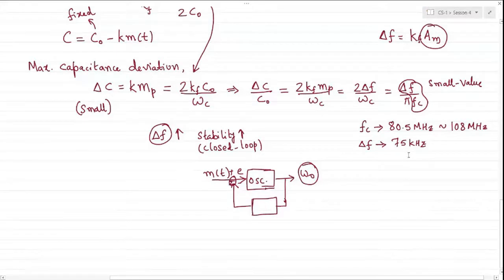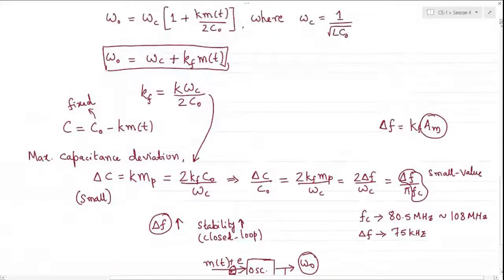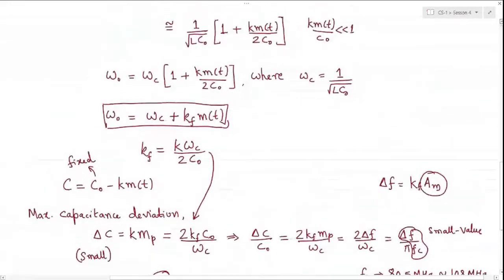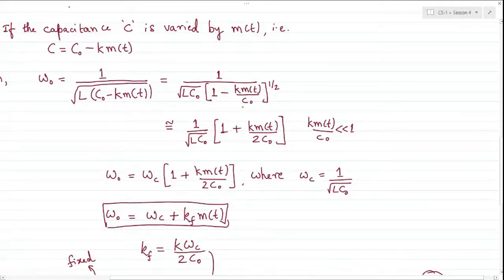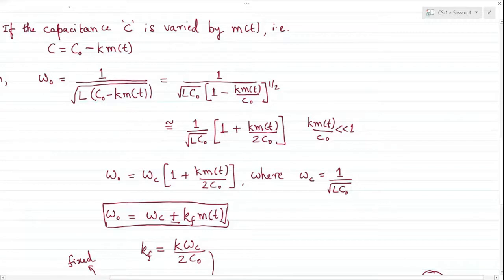A student asks why the capacitance is subtracted. The instructor explains: if C = C_naught minus k·m(t), when it appears in the denominator under a square root, it goes to the numerator as an addition. The sign was chosen in advance so that omega_naught equals omega_c plus kf·m(t) with a positive sign. If C_naught plus k·m(t) had been used, the frequency variation would have been minus kf·m(t), but it would still vary in accordance with the message signal.